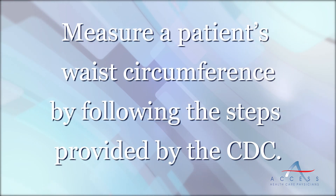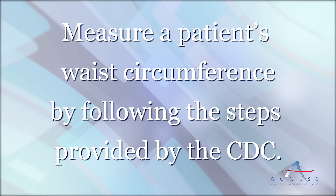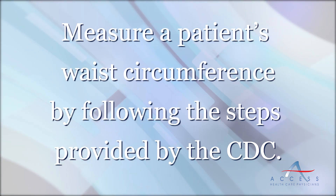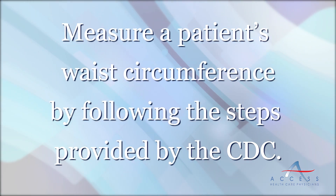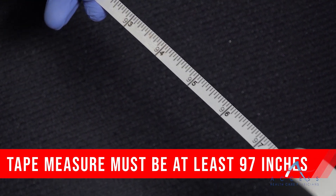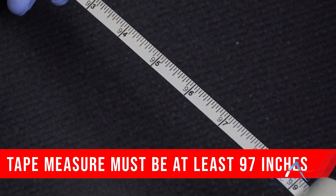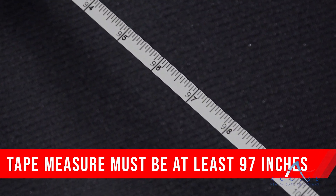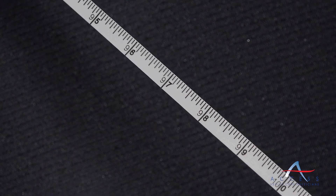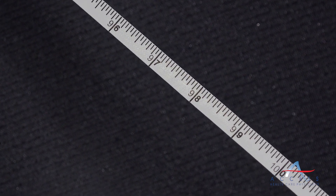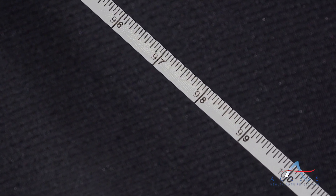Measure a patient's waist circumference by following the steps as provided by the CDC, the Centers for Disease Control. First, make sure you're using a tape measure that's at least 97 inches in length. This will assure that you're able to measure every patient that comes into your office.